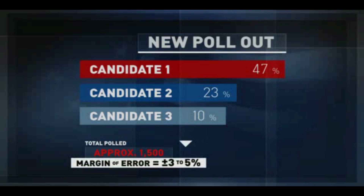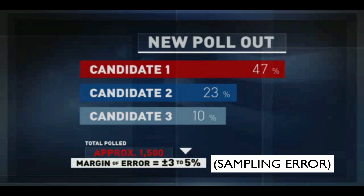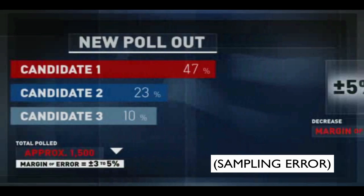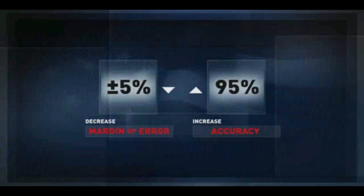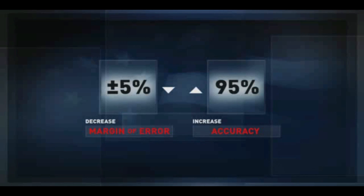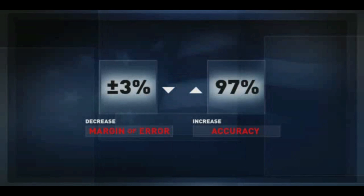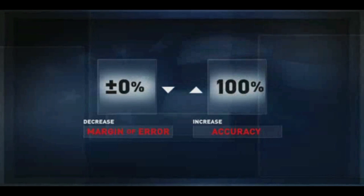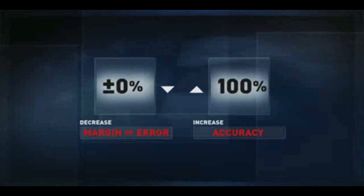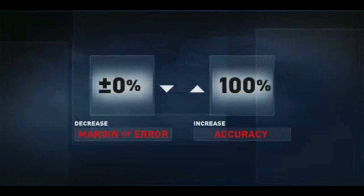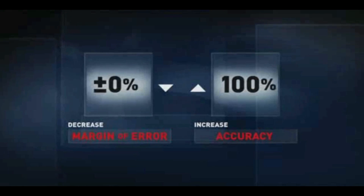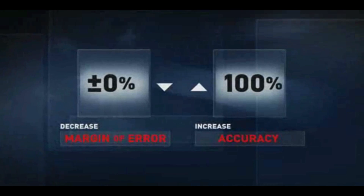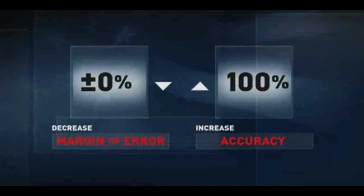You'll also find the margin of error — a number with a plus or minus sign in front of it. This number tells you the range of accuracy of the poll, in this case three to five percentage points. Typically, the smaller the margin of error, the more accurate the poll is.